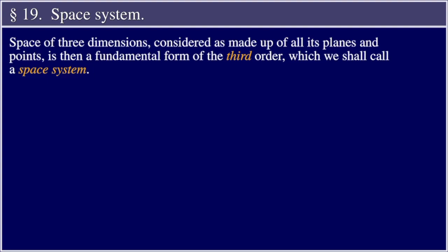Section 19, Space System. Space, of three dimensions, considered as made up of all of its planes and points, is then a fundamental form of the third order, which we shall call a space system.